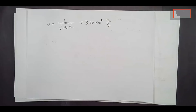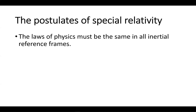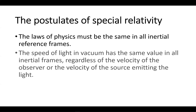That speed of light is a consequence of the laws of physics. Built into those laws is the speed of light, so the second postulate follows from the first: the speed of light in a vacuum has the same value in all inertial frames, regardless of the velocity of the observer or the velocity of the source emitting the light.